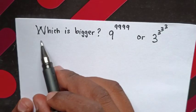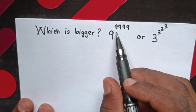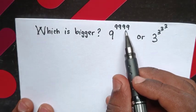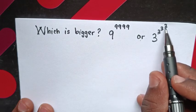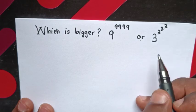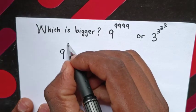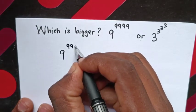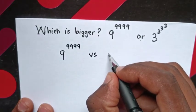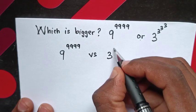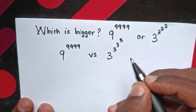Hello. Which is bigger between 9^9999 or 3^3^3^3?